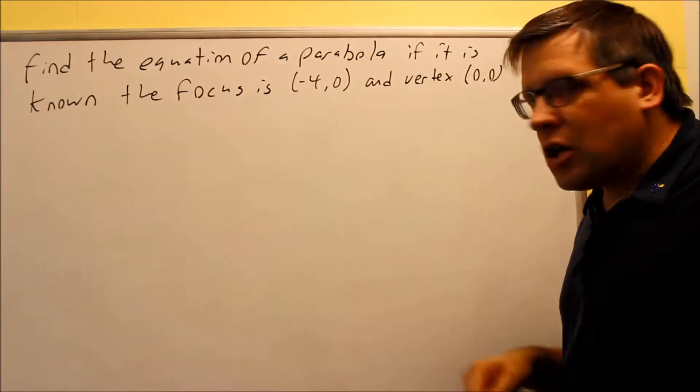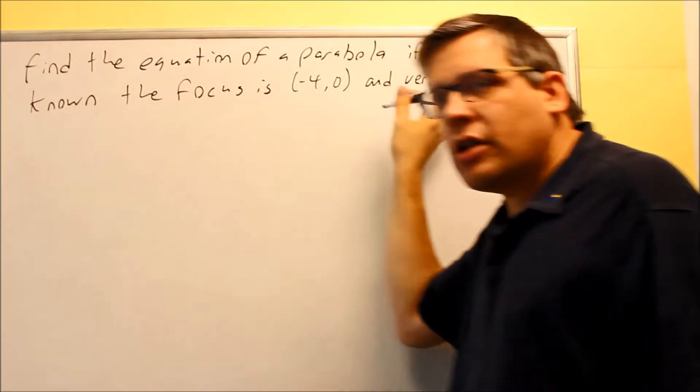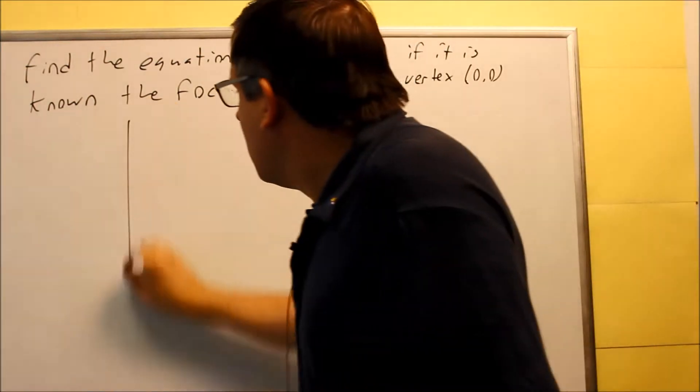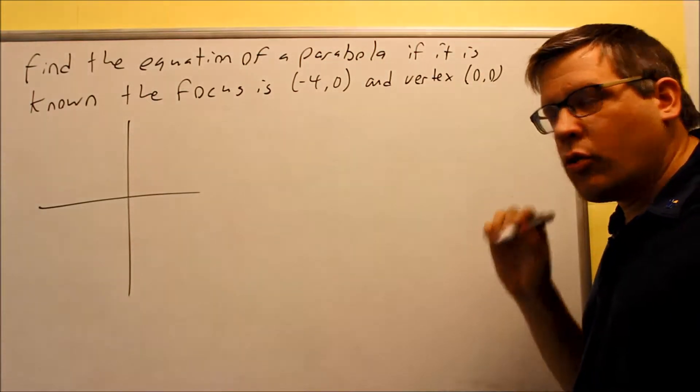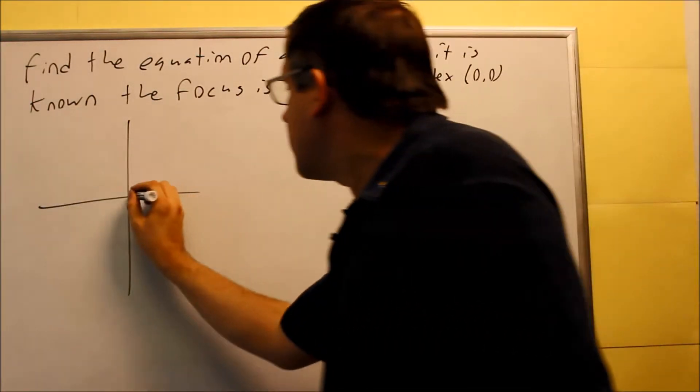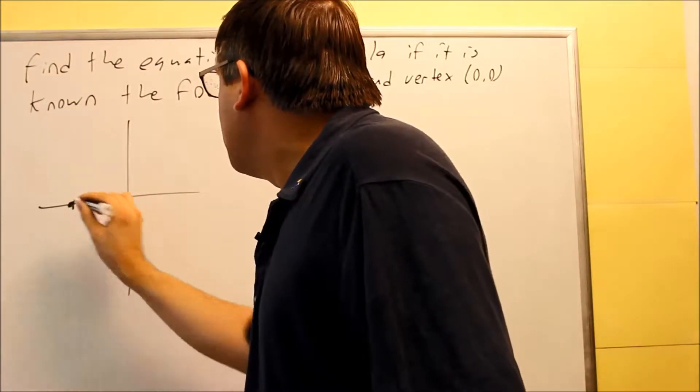So, let's first start by plotting this information. So we want to find this equation only, we're not doing any kind of graph here, this equation. But I need to have a graph at least initially so I can tell what the equation will be. So I have 0, 0 is here, and then negative 4, 0 is here.